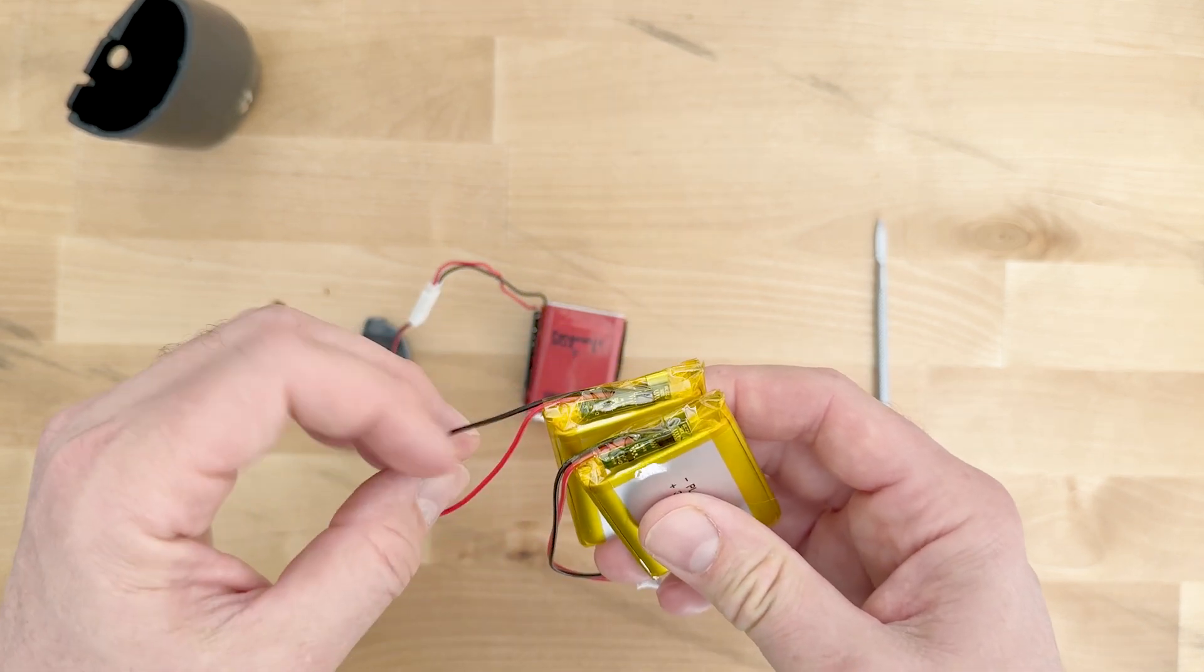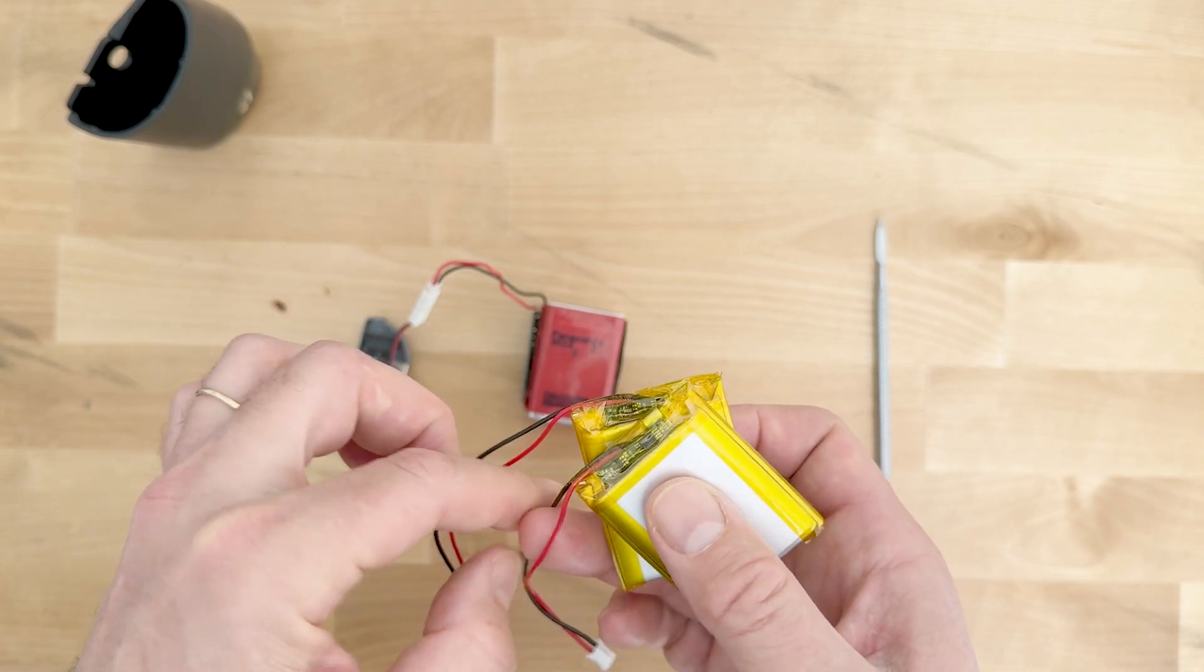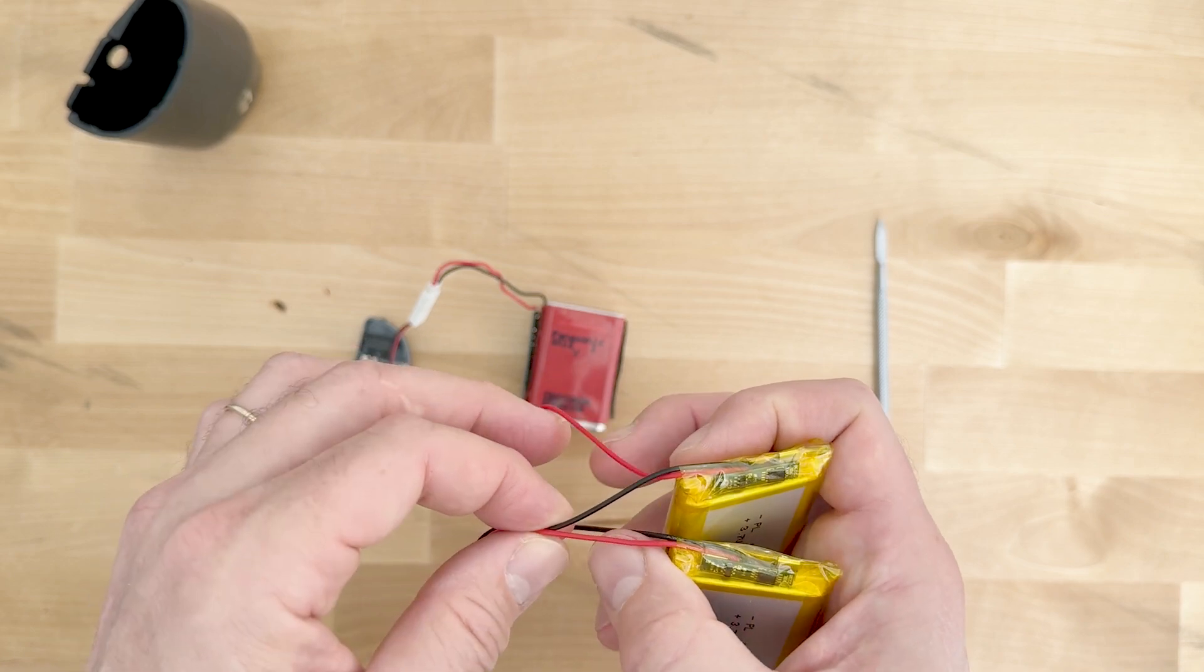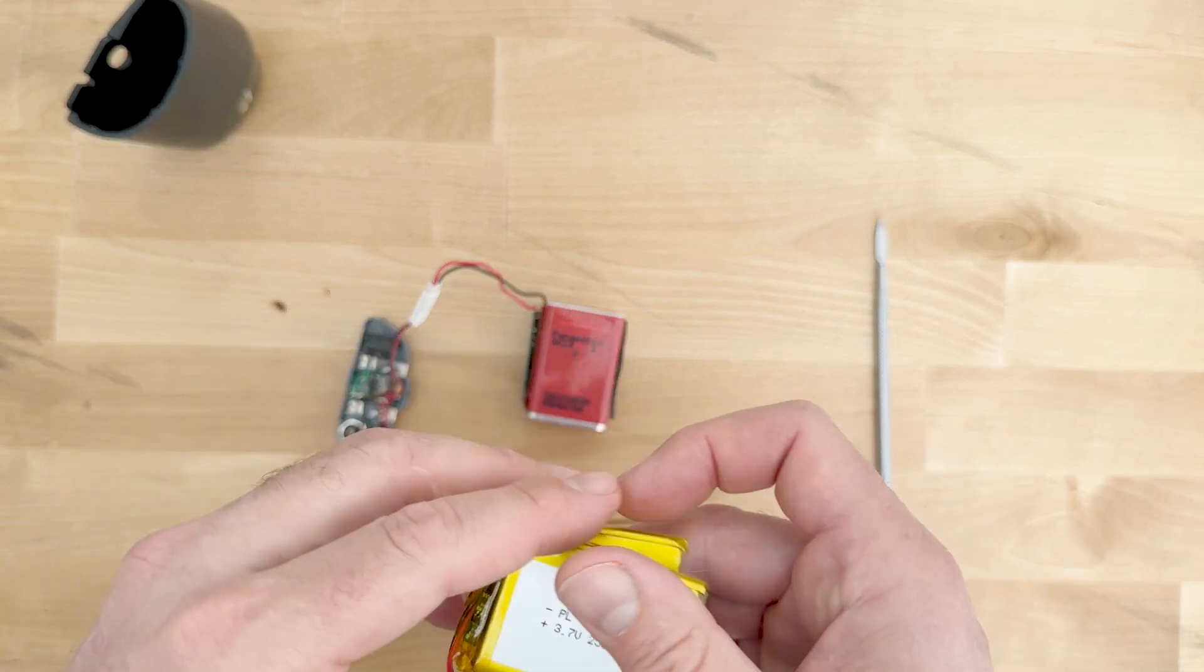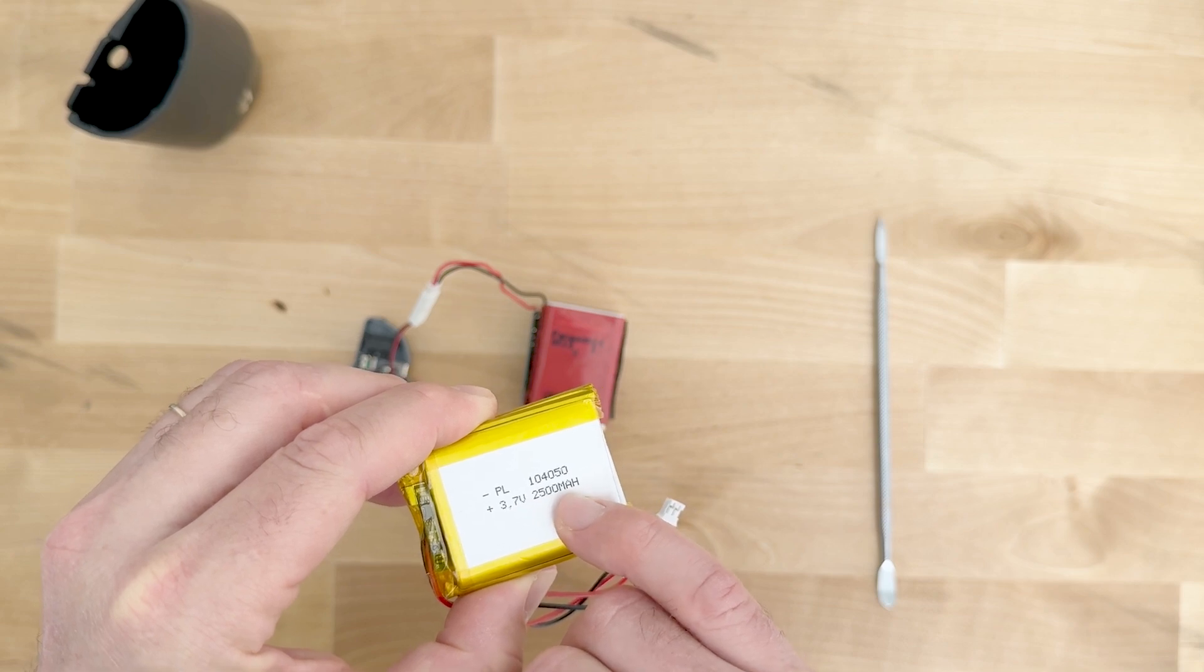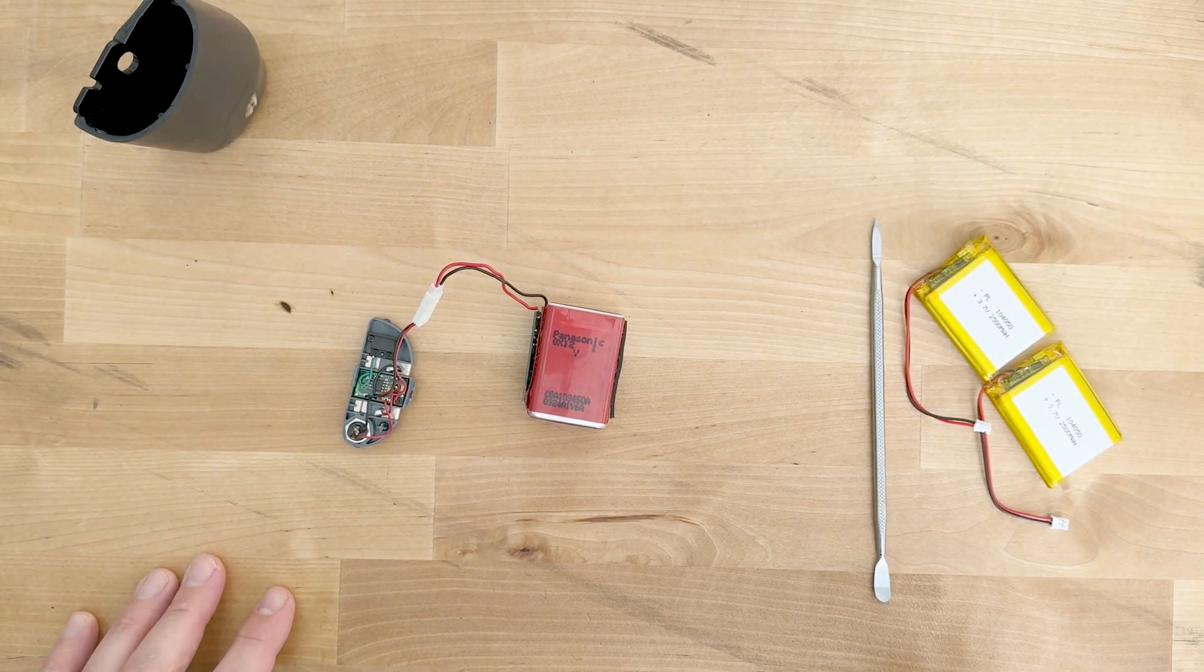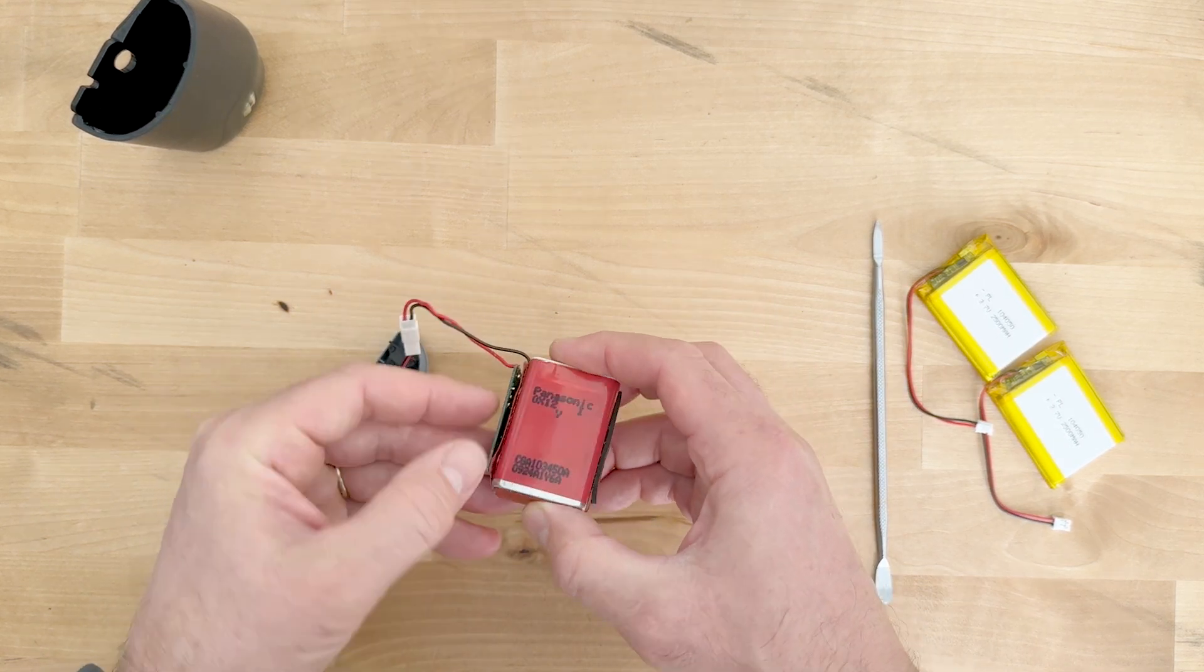So to wire in series, you're going to take one red and one black and wire them together. And the other positive red and negative black will get wired back onto the board. And that's how you'll get your in series and your 7.4 volts. It's really simple. So now we've got to take this old battery apart.